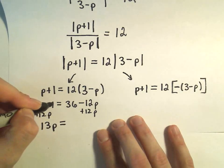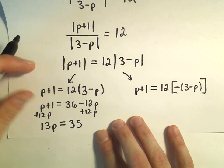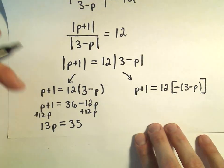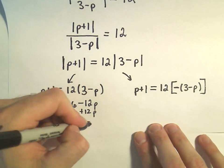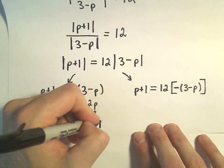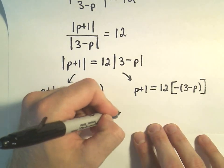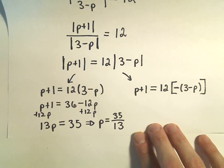So that will give me 13p. At the same time, I think I'll subtract 1 from both sides. So that will give me 13p equals 35. And if I divide both sides by 13, that will give me that p equals 35 over 13 as one of my solutions.